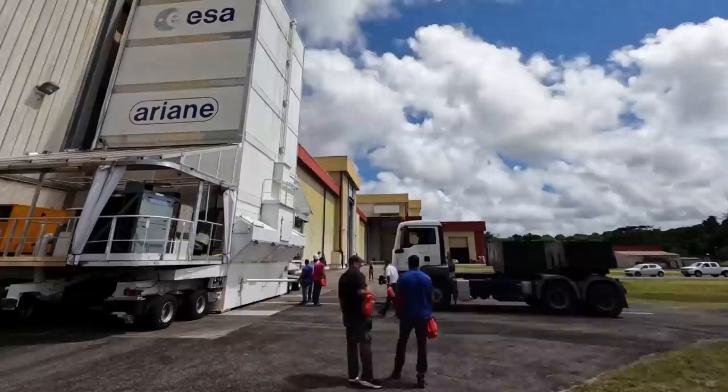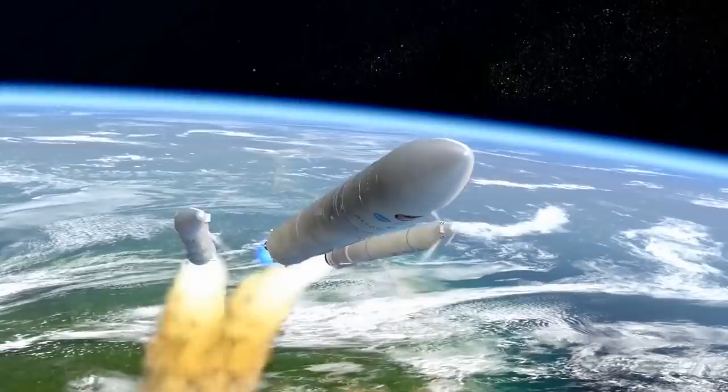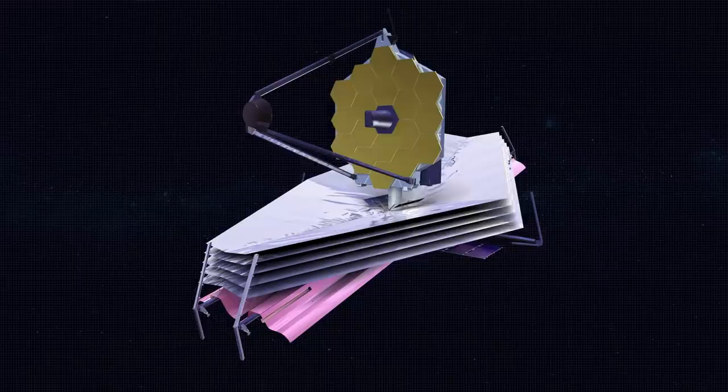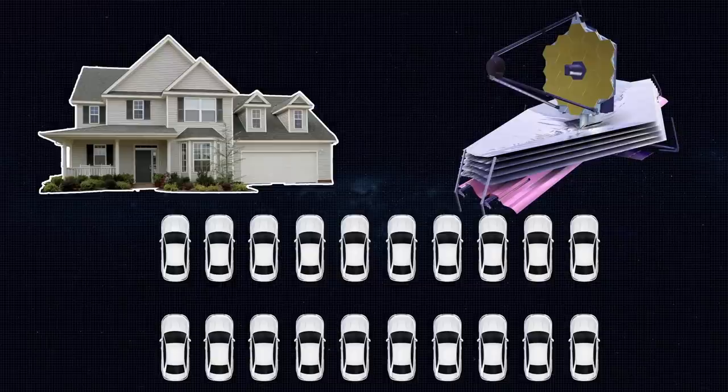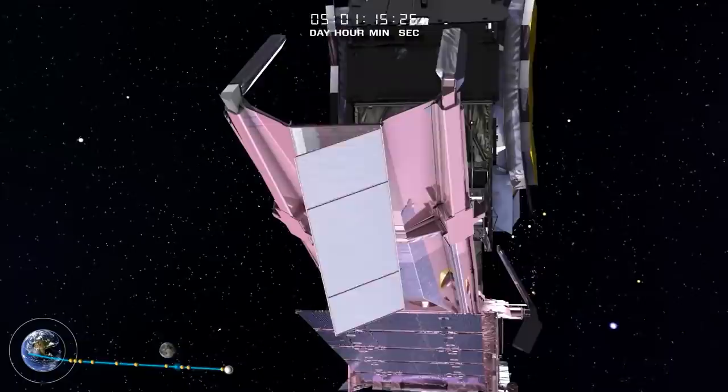The launch took place on December 25, 2021. It was delayed by a week due to additional technical checks and bad weather. And then, when the powerful Ariane 5 disappeared behind the clouds, thousands of people silently prayed. The telescope, as high as a three-story building, and an area of a parking lot for 20 cars had to be brought into a working condition in space without human participation.